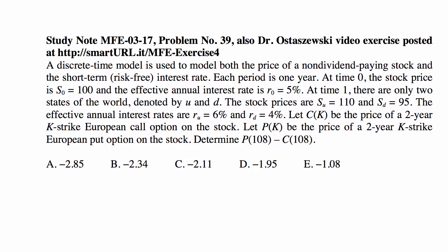Let C(K) be the price of a two-year K-strike European call option on the stock. Let P(K) be the price of a two-year K-strike European put option on the stock. Determine P(108) - C(108).